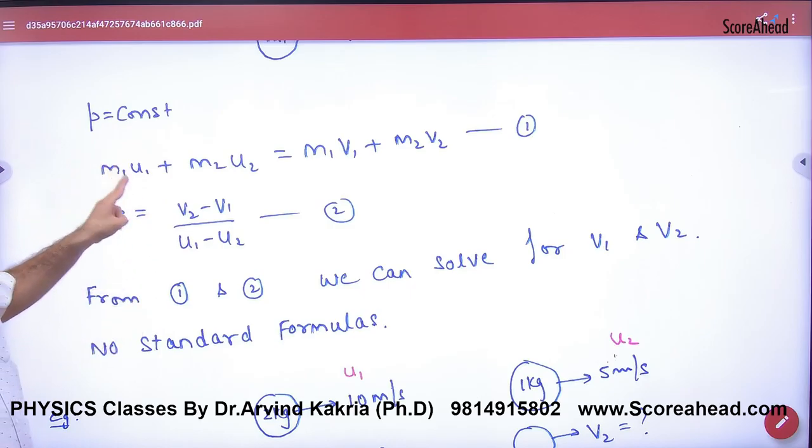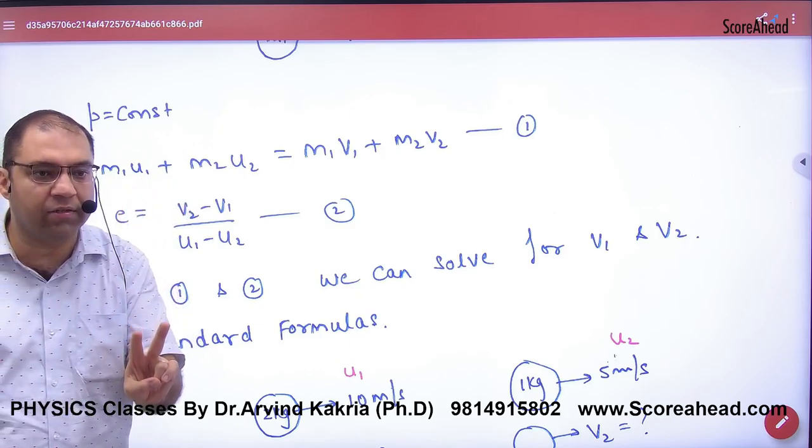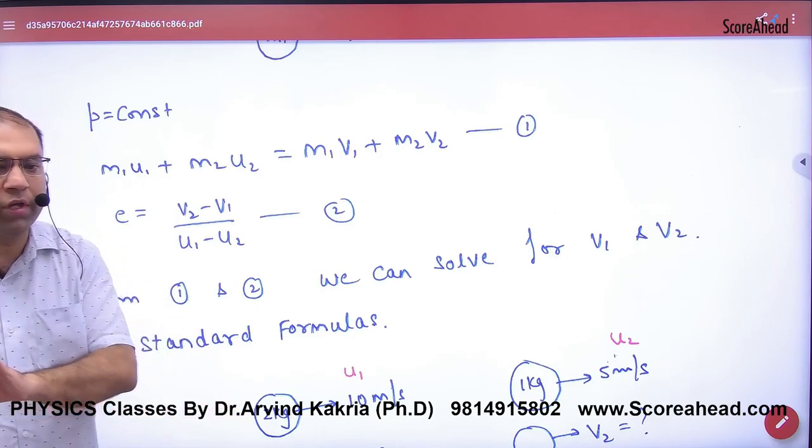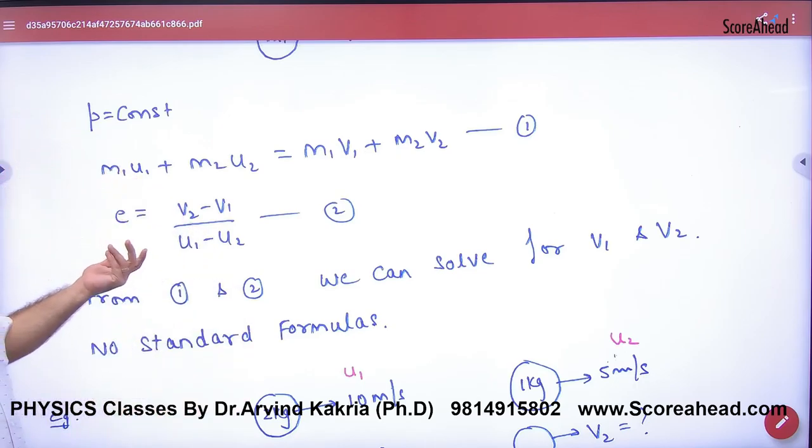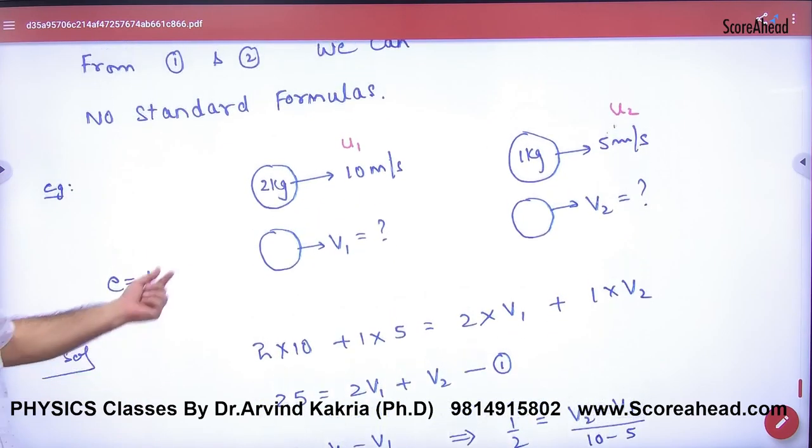In the question you will be given M1, U1, M2, U2, and E. You will have two unknowns, V1 and V2, which can be calculated simultaneously. There is no formula, there is nothing. When there is a question, then a momentum equation and a restitution equation will give the answer.